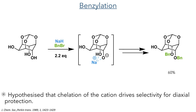With this in place, the next step was another protection, this time with benzyl bromide and sodium hydride. By using only two equivalents, they can selectively protect the two axial hydroxyl groups in a 60% yield. This is unexpected, as axial hydroxyl groups are typically less nucleophilic than equatorial groups due to steric hindrance from other atoms in the axial positions. It has been proposed that this selectivity arises from chelation of the cation between the two axial oxygen atoms, which drives the selectivity to form alkoxides on the axial groups, making them more nucleophilic than their equatorial counterpart.